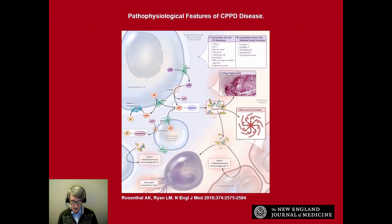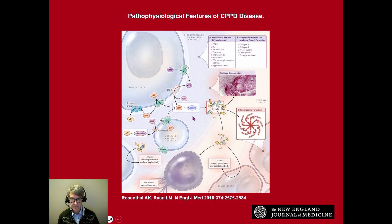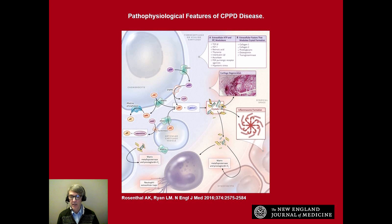Now the question is, why does this occur? Normally, chondrocytes do make a lot of calcium pyrophosphate, and that's associated with production of extracellular ATP. Why it leads to disease in some people and not others is not fully understood. These crystals can mediate disease several ways: they can initiate inflammation — the classic pseudogout — they can have direct catabolic effects on chondrocytes causing cartilage damage, or they can alter the mechanical properties of the cartilage, also causing cartilage damage.